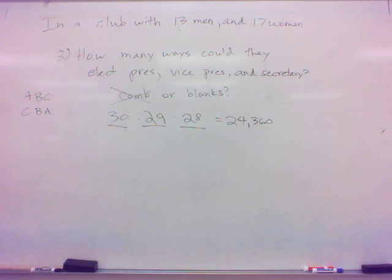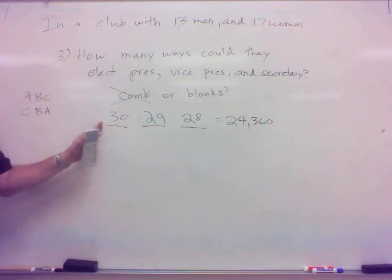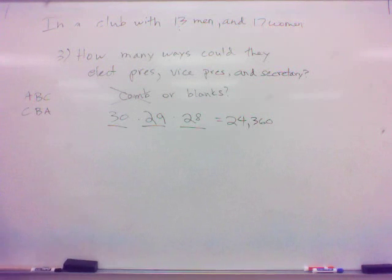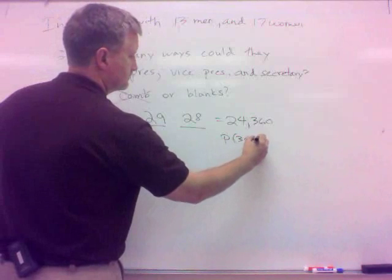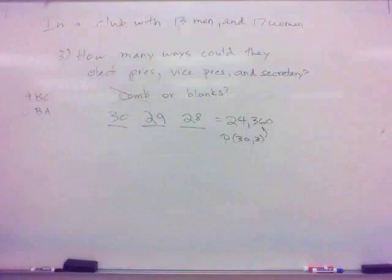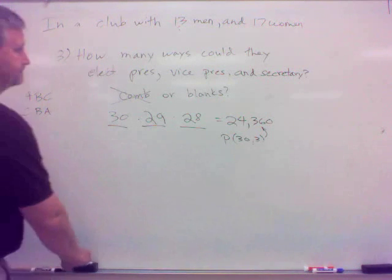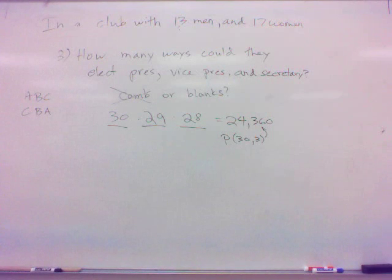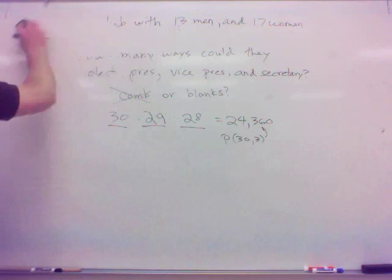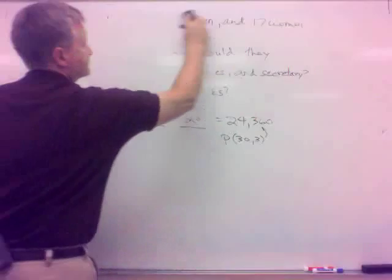Now, you know something else? We could have used what else here? Permutation, right? Because this is a partial countdown product. I could have used, I didn't, but I could have used permutation. You don't have to use permutations, but sometimes you can use permutations. But this I could have done permutation 30, 3. I could have done that. That would give us that same number. Okay. Alright. Everybody okay with that?